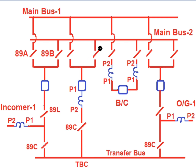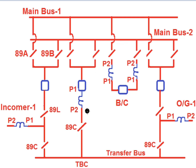The TBC bay has two isolators: 89A, 89B, and 89C. If 89A is closed, 89C is closed, and the circuit breaker is closed, then the TBC bay couples main bus 1 with the transfer bus. If 89B is closed, 89C is closed, and the circuit breaker is closed, then the TBC bay couples main bus 2 with the transfer bus.